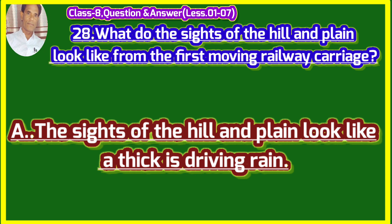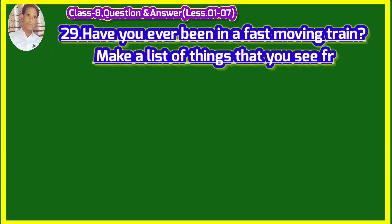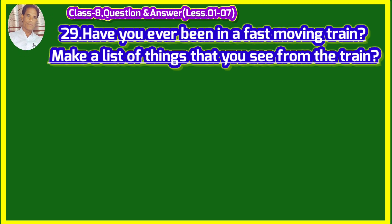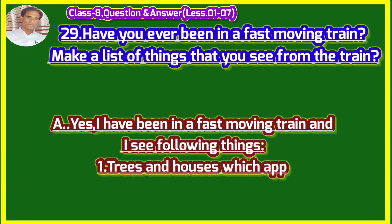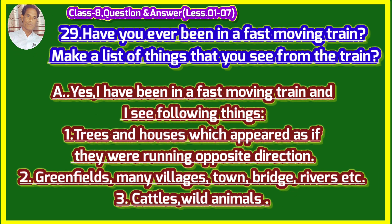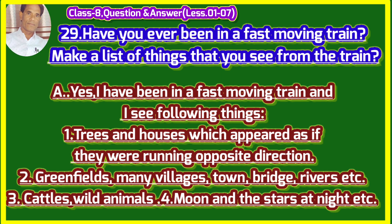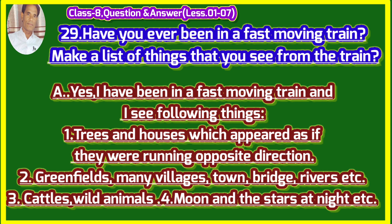Have you ever been in a fast moving train? Make a list of things that you see from the train. Yes, I have been in a fast moving train and I see the following things: first, trees and houses which appeared as if they were running in the opposite direction; second, green fields, many villages, towns, trees, rivers, etc.; third, cattle, wild animals; fourth, moon and the stars each night, etc.